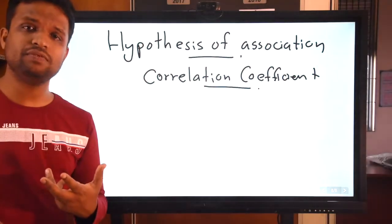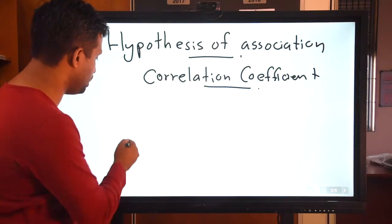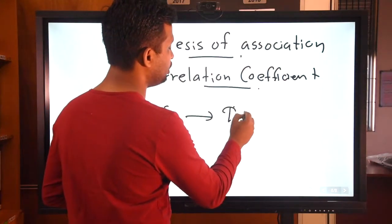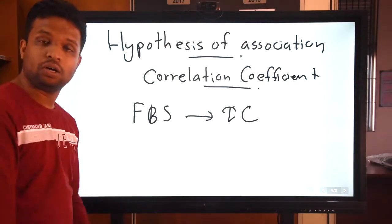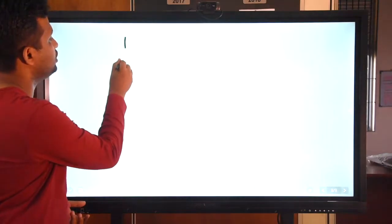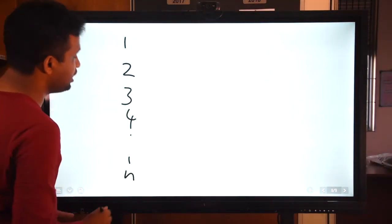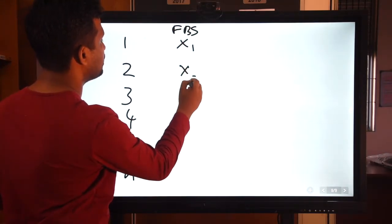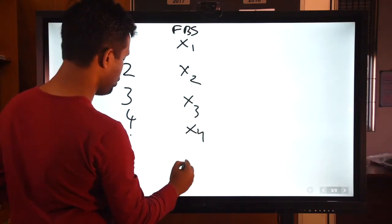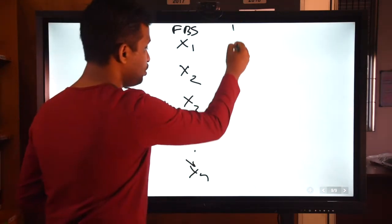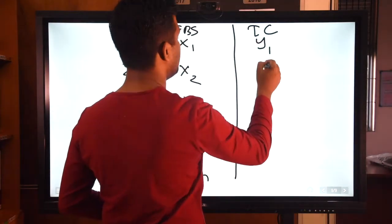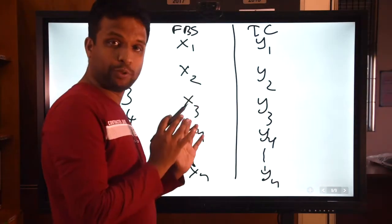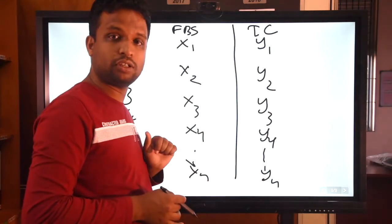For example, we are interested in whether there's a significant association between fasting blood sugar or blood glucose level versus serum total cholesterol level. Assume that we have n number of individuals with fasting blood sugar values x1, x2, x3, x4, up to n, and their total cholesterol levels y1, y2, y3, y4, up to yn.